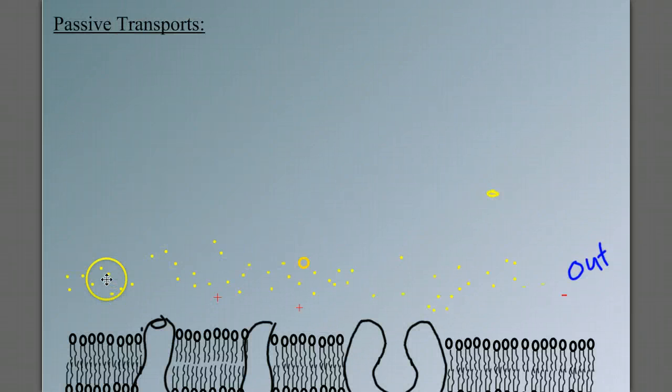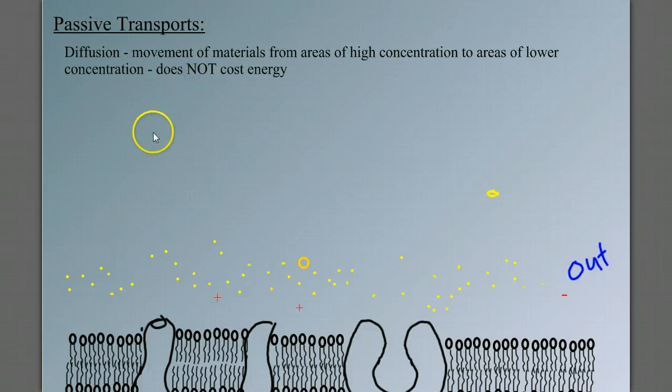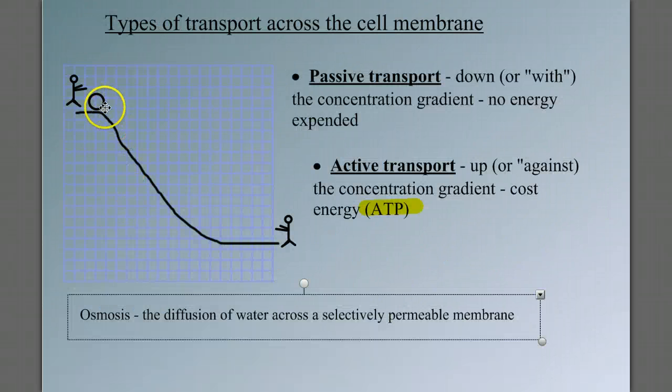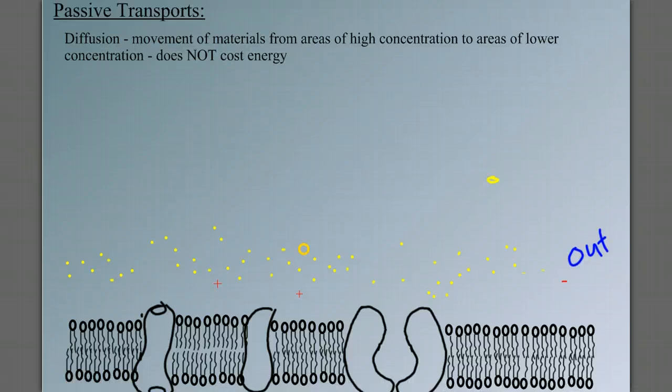Let's look at some specific types of passive transport. And the first is diffusion. Diffusion is the movement of materials from areas of high concentration to areas of low concentration. It does not cost energy. It's going down the hill.